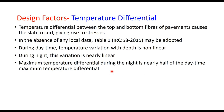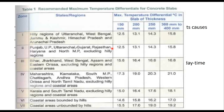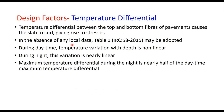Temperature differential between the top and bottom fibers of the pavement is another important design factor, as it can cause the slab to curl and generate stresses. The temperature gradient depends on the longitude and latitude of the area and must be estimated for the given situation. In the absence of local data, a table given in IRC 58 can be used to determine the maximum temperature differential depending on the area and depth of the concrete slab. During daytime, temperature variation with depth is assumed to be non-linear, while during nighttime it is linear. Maximum temperature differential during night is taken as half of the daytime maximum.